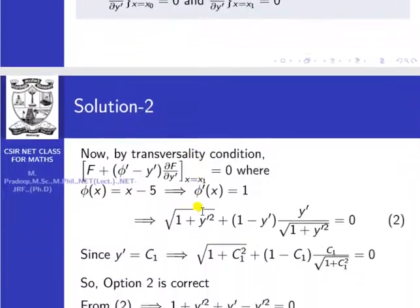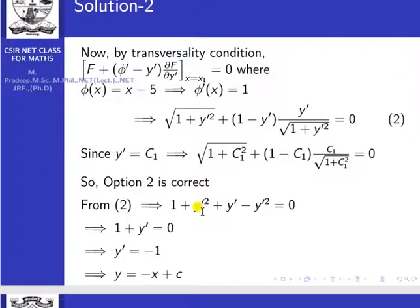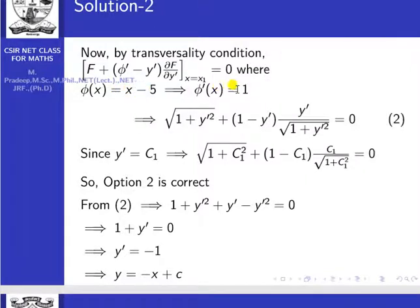Coming to the problem: applying the transversality condition F plus (pi-dash minus y-dash) times ∂F/∂y-dash at x equal to x1 equal to 0, where pi(x) equal to x minus 5. Differentiating, pi-dash(x) equal to 1. Substituting: capital F is root of (1 plus y-dash squared), so the expression becomes root(1 plus y-dash squared) plus (1 minus y-dash) times y-dash divided by root(1 plus y-dash squared) equal to 0.